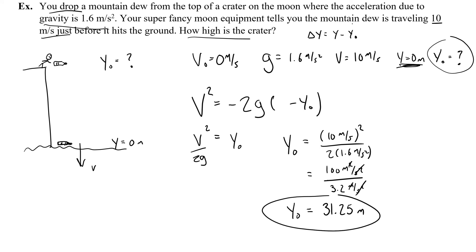So the initial height of the crater was 31.25 meters. We've learned how to use the acceleration due to gravity in our motion equations, and you can now solve any problem where an object is dropped and allowed to freely fall. Please listen to a Tom Petty song in honor of this free fall motion video.